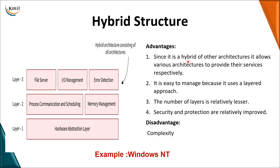Coming to the advantages of the hybrid structure: since it combines two structures, you get the advantages of both. Managing is easy because operations are designated in a layered approach with a fixed number of layers. Security and protection are relatively improved because one layer will not interfere with another. The disadvantage is that it is complex because features of both structures must be kept in mind. These are the basic operating system structures used when designing an operating system, and in the next class we will look at an example of the Linux operating system.